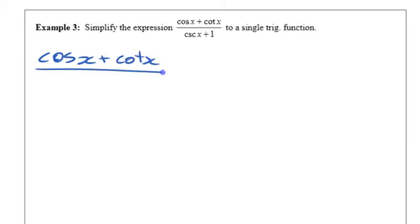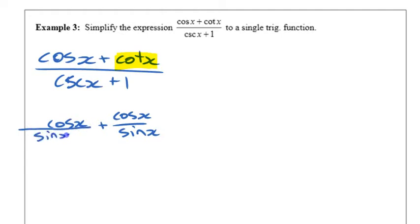So if we decide that first we're going to change everything into sine and cosine, that is going to change into cosine over sine. We're going to leave this cosine the same, but what we're going to do is create a common denominator here. We're going to multiply it by sine x over sine x, and the whole thing is over one over sine x plus one.